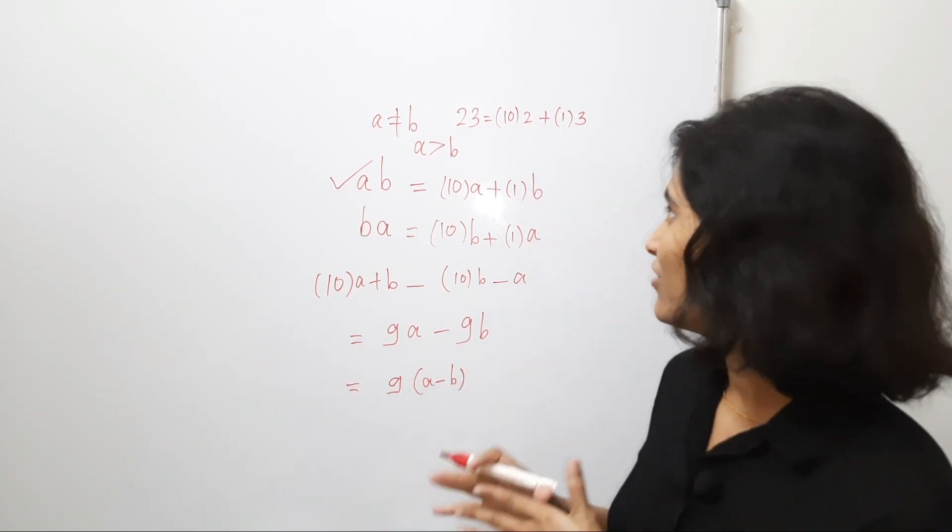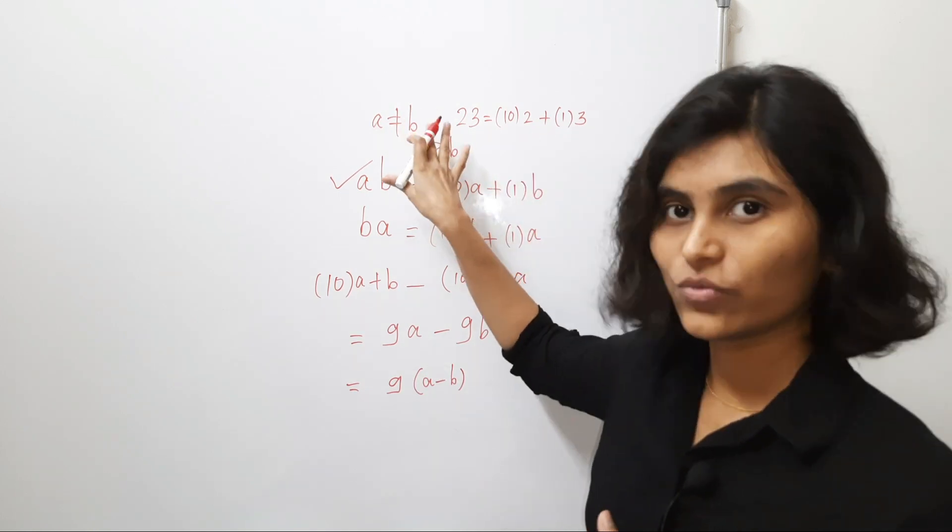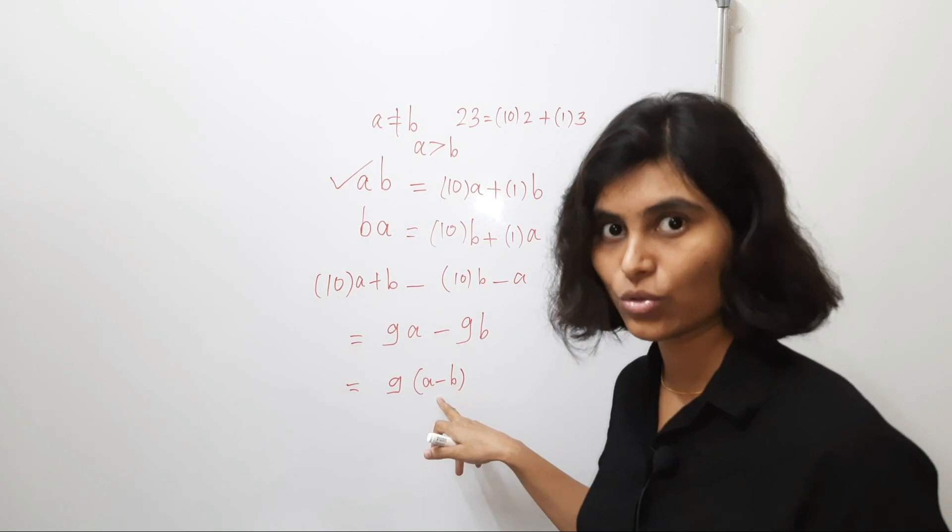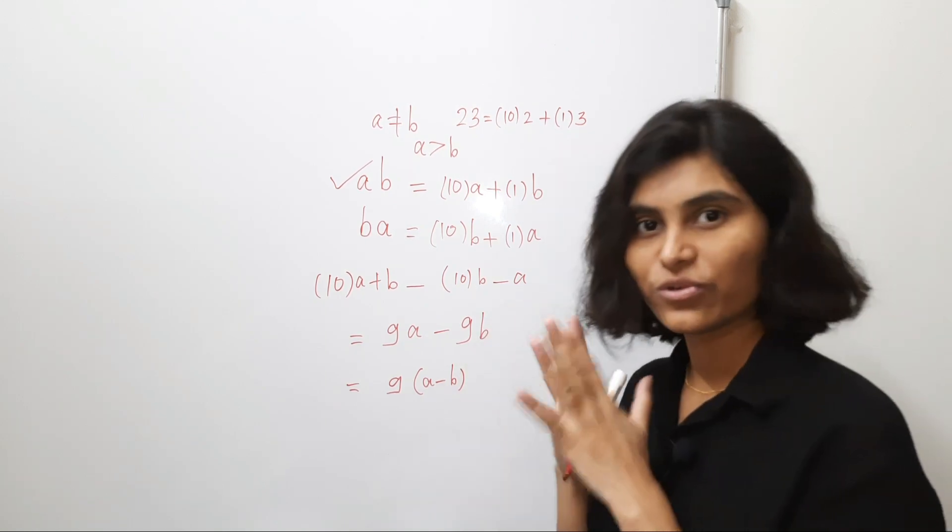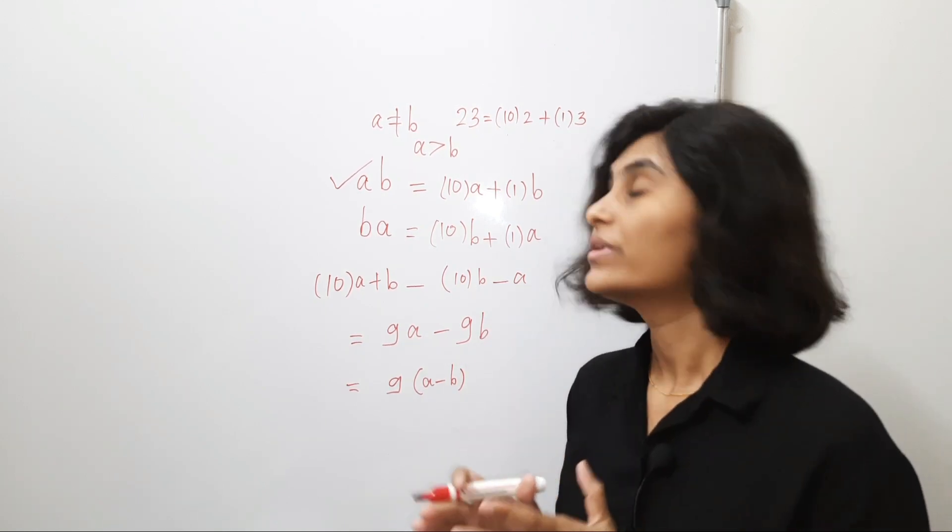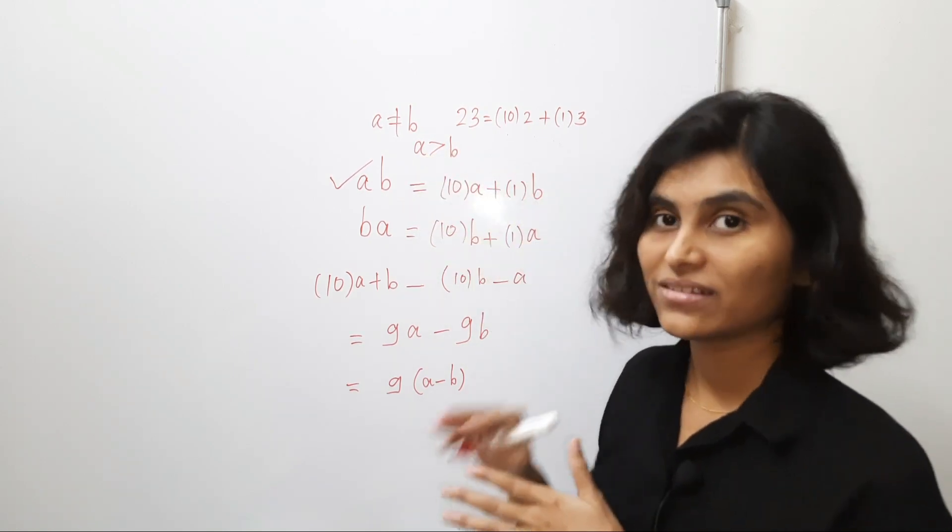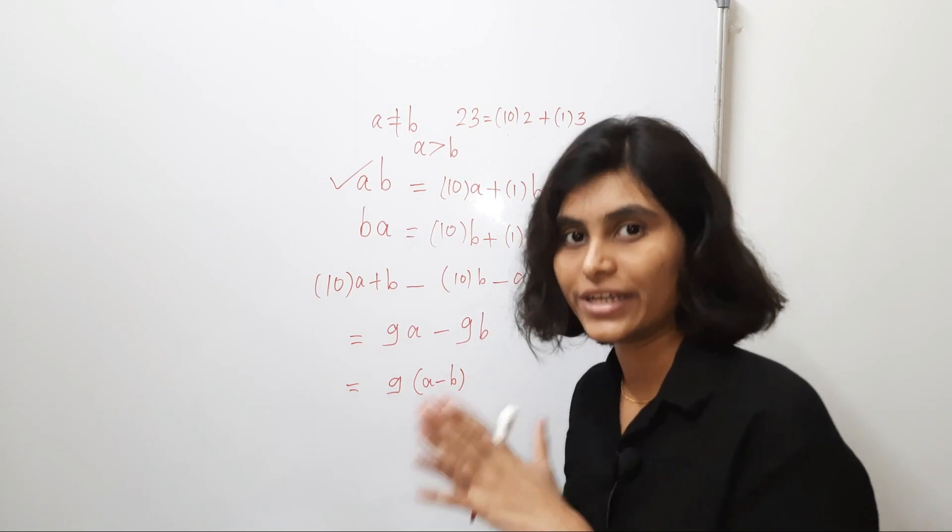Now, we have assumed that this A is not equal to B, that means this A minus B is not 0. So, what are the choices for A minus B? Now, we have taken that A is greater than B. That means A minus B is a positive integer.